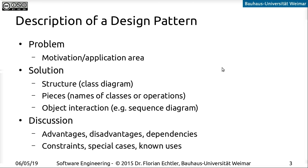Of course, we need some kind of motivation and description of where the problem happens, which are the application areas, then a description of the actual solution of the pattern itself. There's often a class diagram, and sometimes also a sequence diagram to describe how the individual objects interact with each other, and a bit of additional background on what the individual classes and operations do. In many cases, such a pattern is not a solution for everything — there are specific constraints you have to consider. Most of them have advantages as well as disadvantages, which you have to keep in mind.